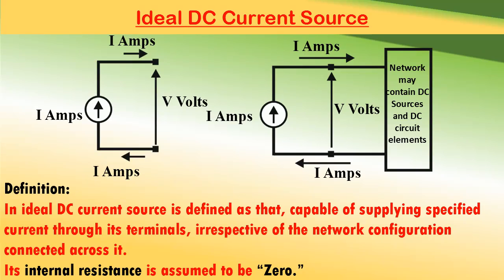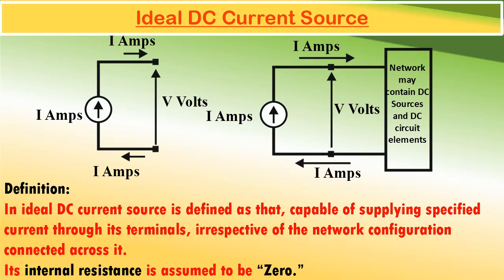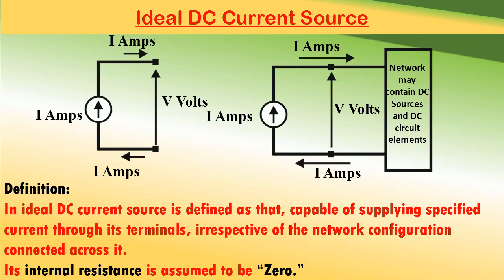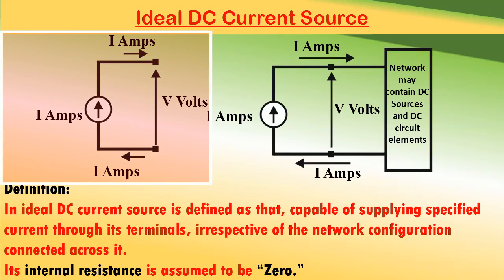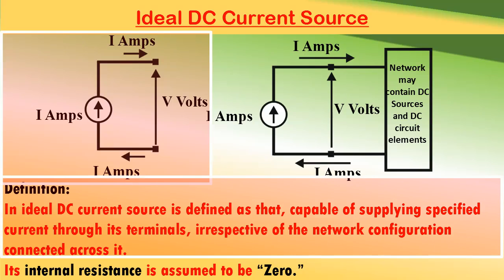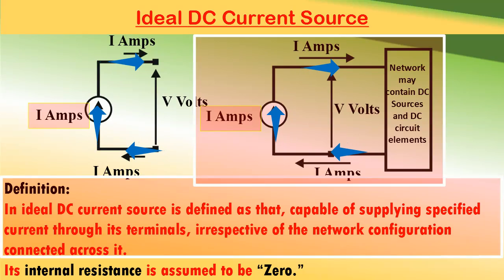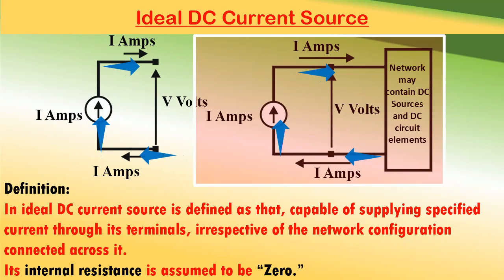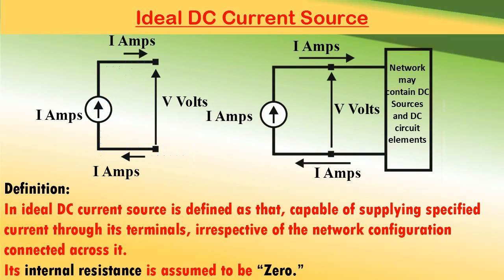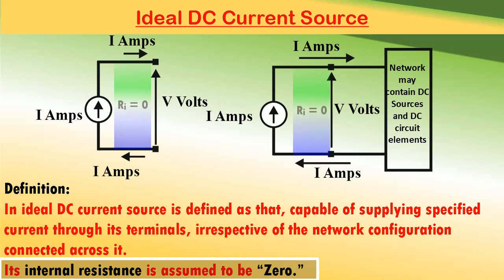We discussed about ideal independent DC voltage sources. Now let us see what is an ideal DC current source. An ideal DC current source is defined as that which is capable of delivering a specified current through its terminals irrespective of the network configuration connected across it. It is called the ideal DC current source because its internal resistance is assumed to be zero.